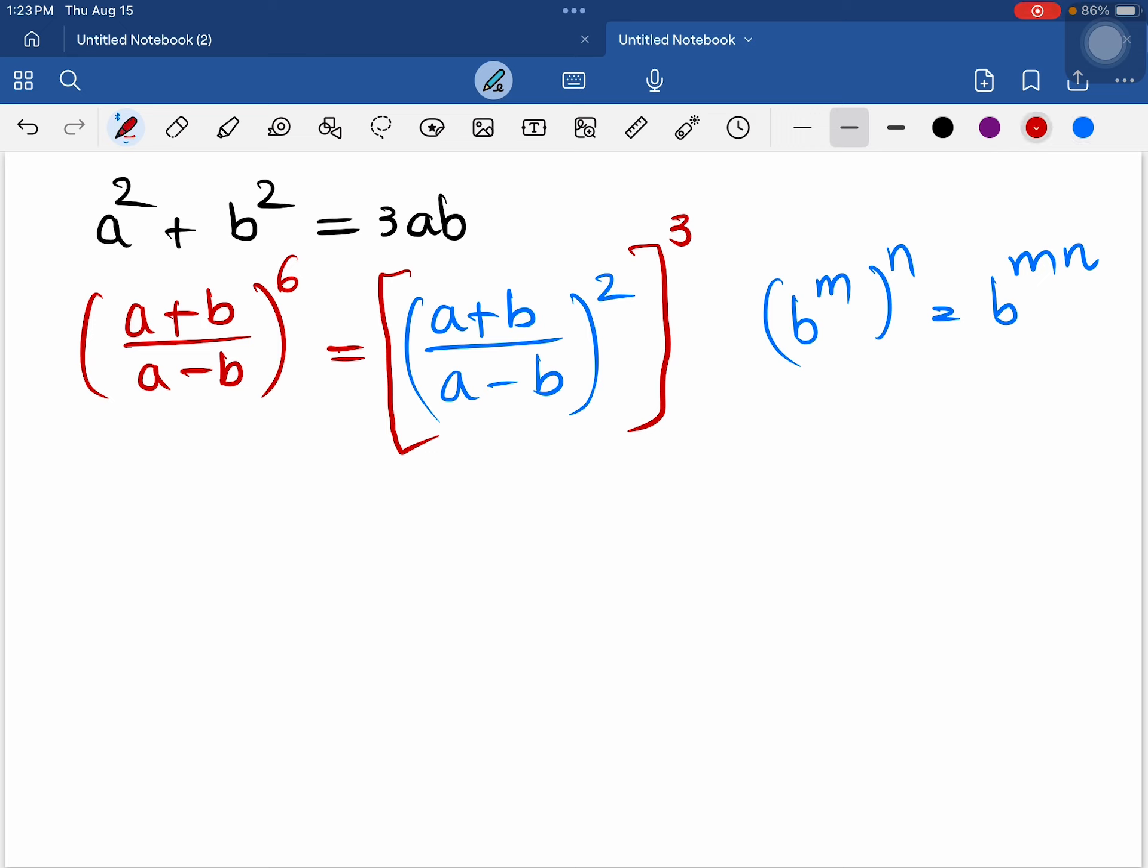Next step, a plus b the whole power 2, divided by a minus b the whole power 2, raised to the whole power 3.